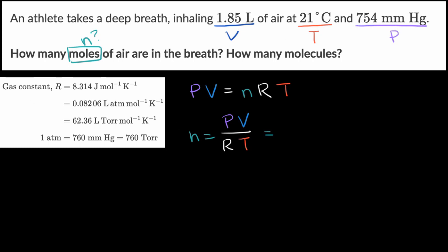So let me write that down. So this is 754 torr. And then we're going to multiply that times the volume. And here they give the volume in liters. And we're probably going to be using this version of the ideal gas constant that has liters, torr, moles, and kelvin. So times 1.85 liters.